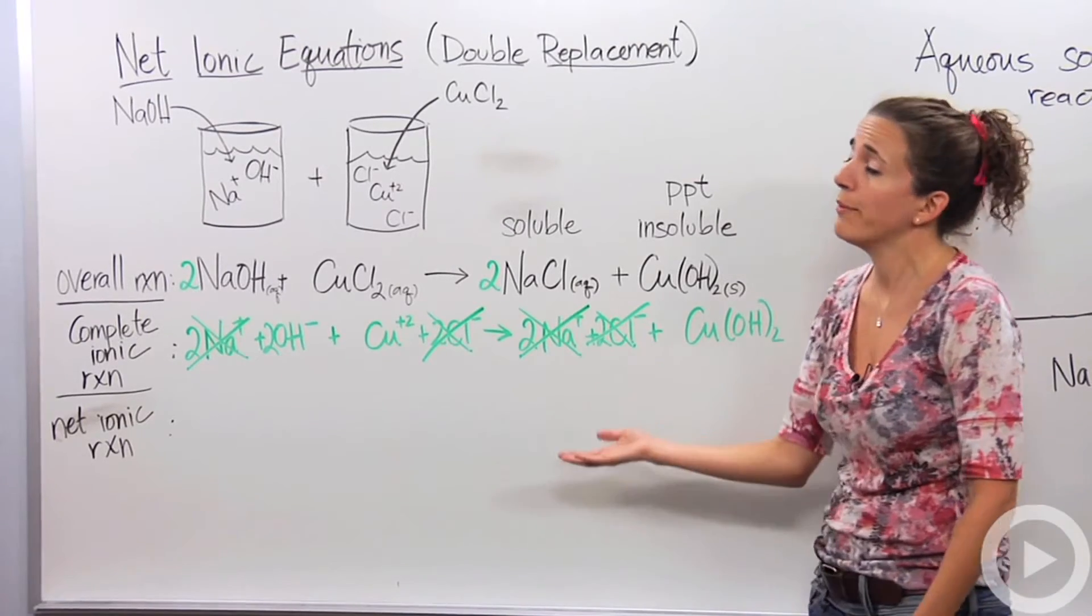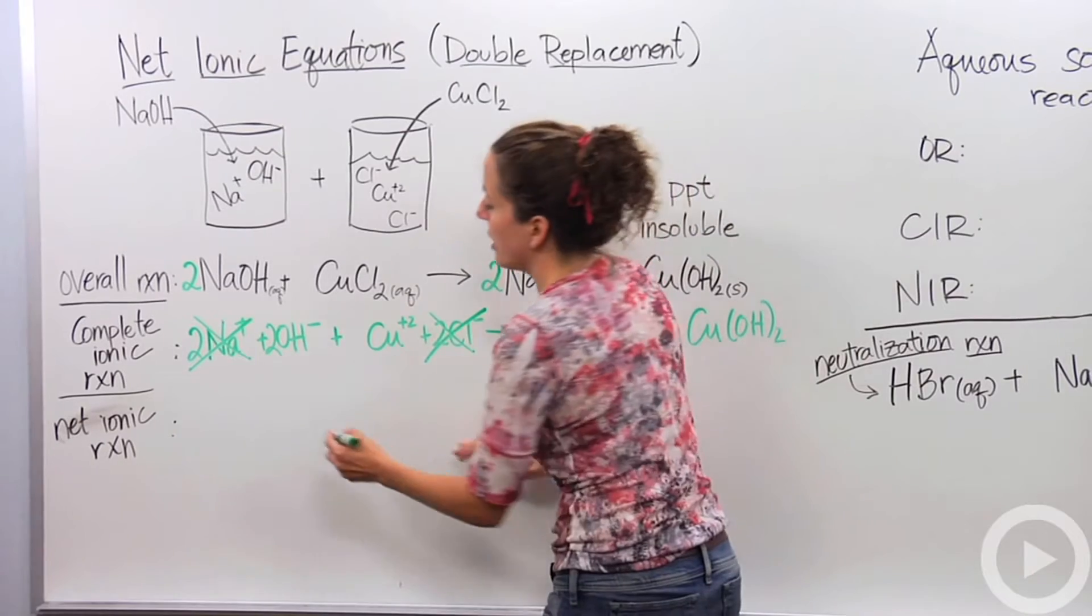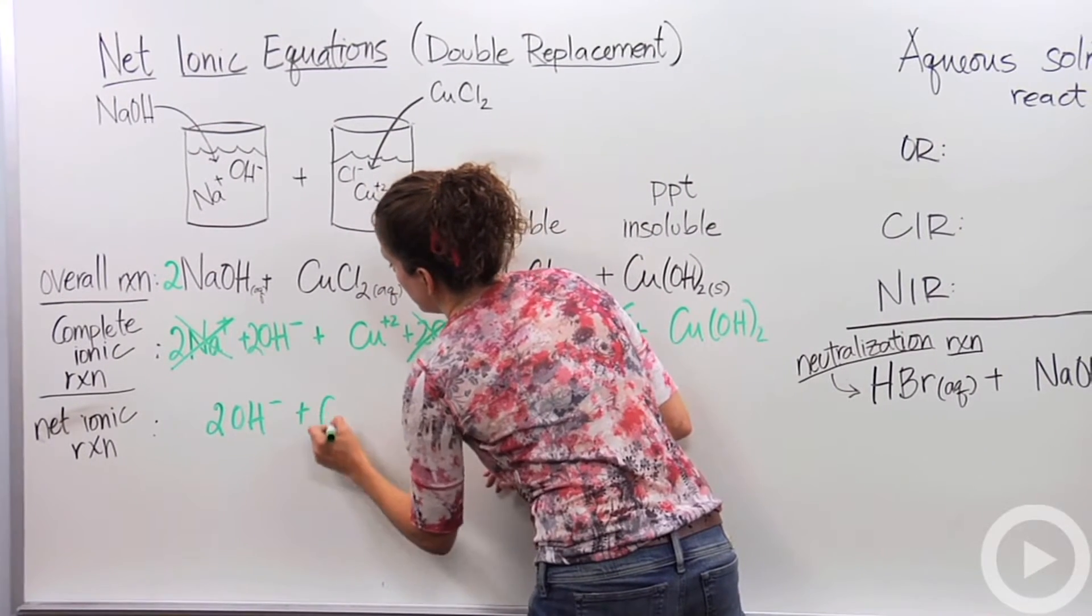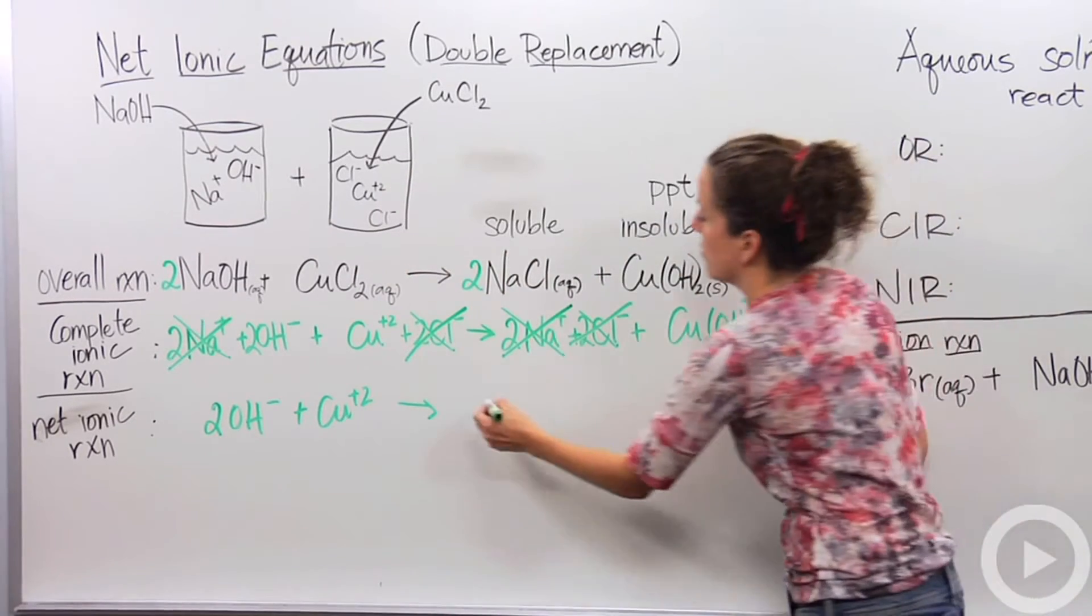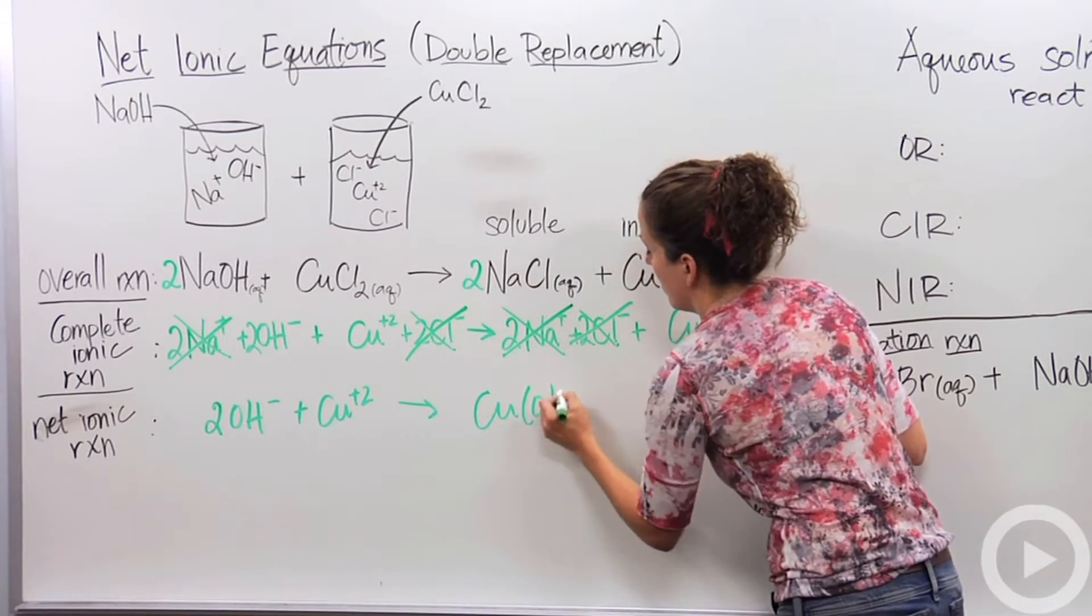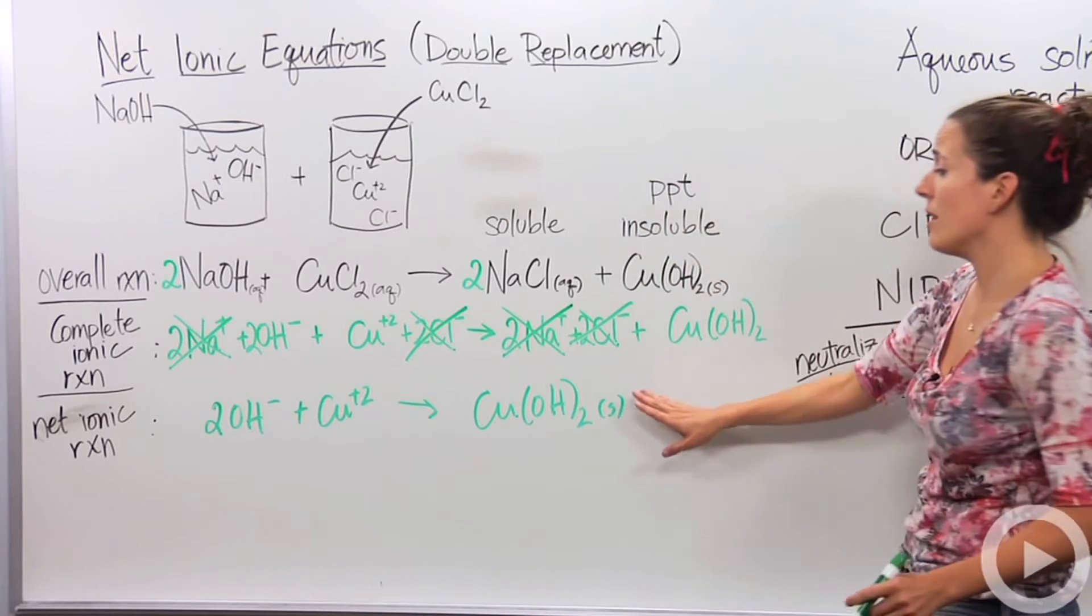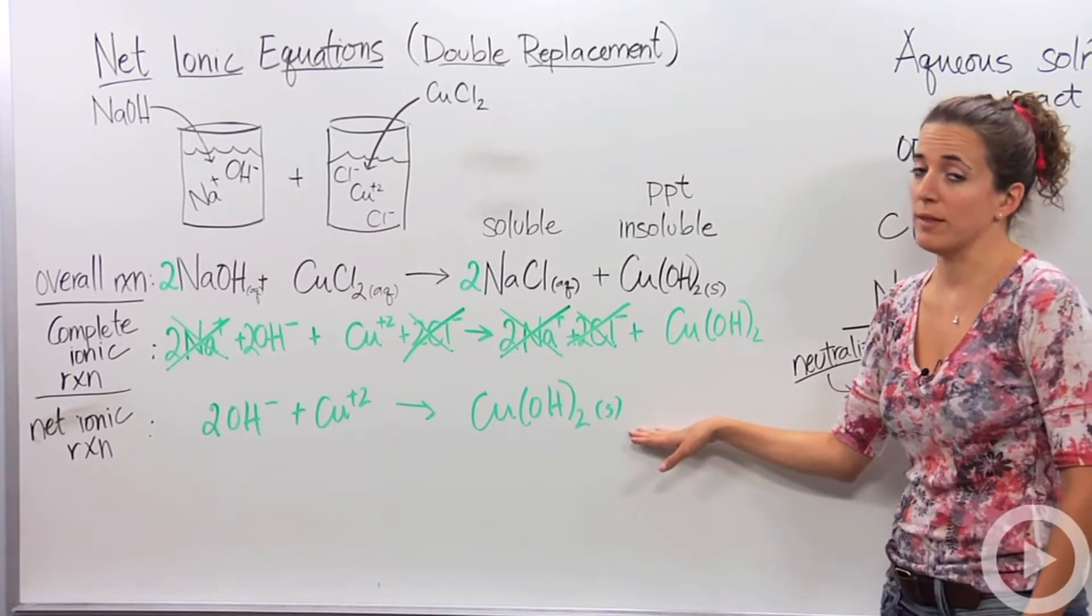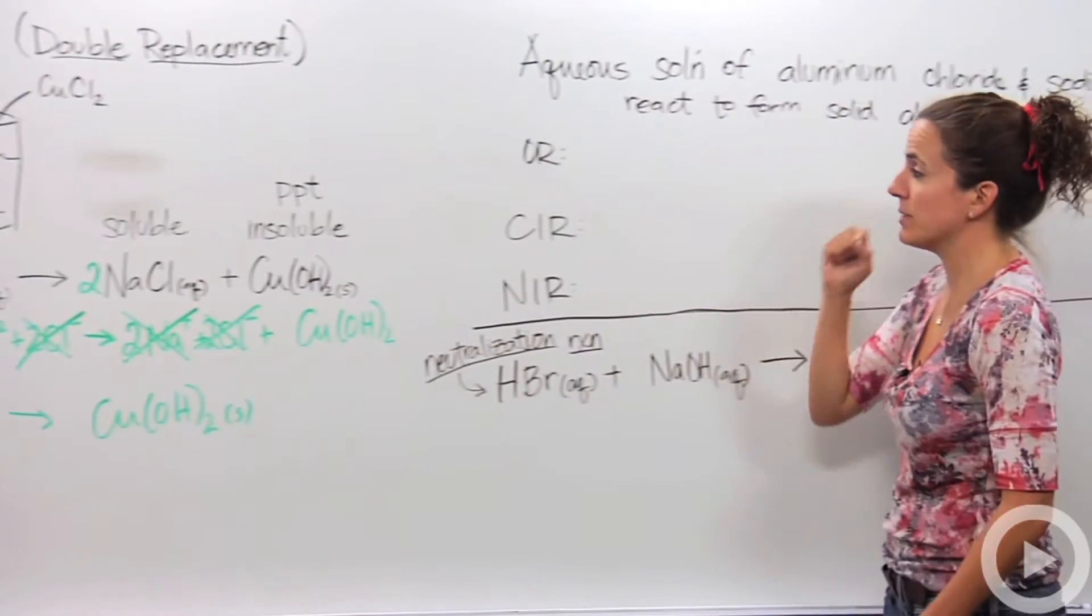So then we have our leftovers, and this is what we get to our net ionic equation. I'm going to bring those down: 2OH minus plus Cu plus 2 gives me CuOH2. This is our net ionic reaction. This is what actually is happening within this reaction. Let's take this and go up and do this one more time, just to make sure that we understand.